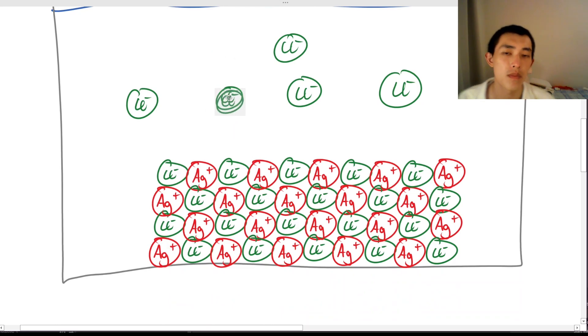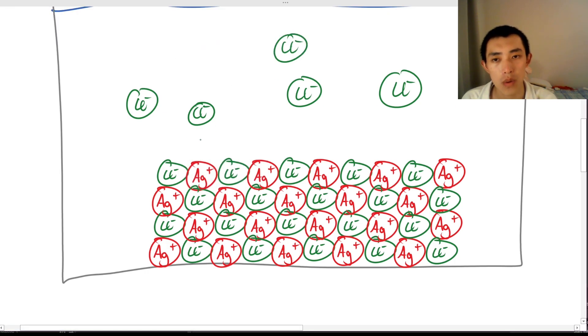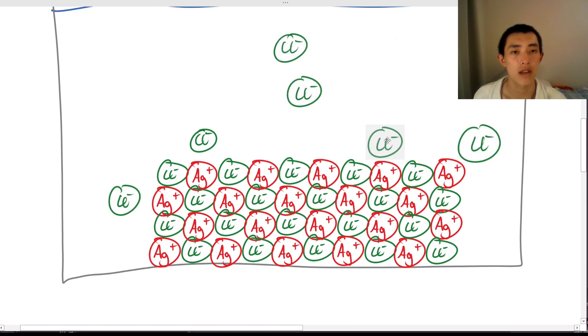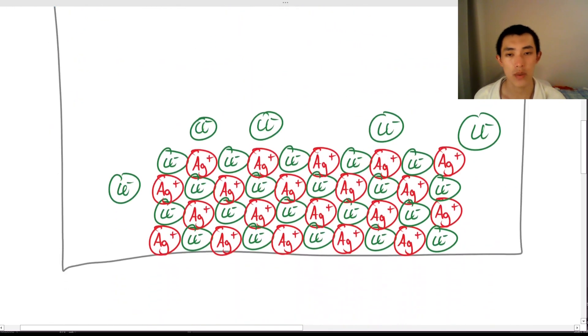So our chlorine, so these surface silvers, they would love to have an extra chlorine here. So what might happen is that this chlorine, it would be kind of attracted. It would not bond to it, but it would kind of like hover around it. And this chlorine might hover around this silver. And this chlorine might hover around that silver. And the same here. They kind of just hover around. They're not bonded. They're not part of the lattice, but they're just kind of hovering around. Now, as you add more and more silver in, what's going to happen? As you add silver in, then perhaps these chlorines can actually become part of the lattice, because now it's fully bonded.